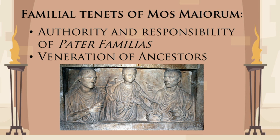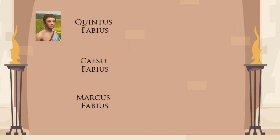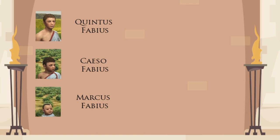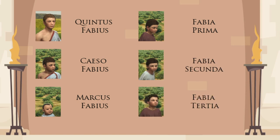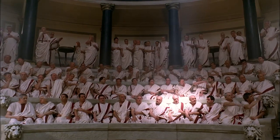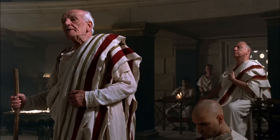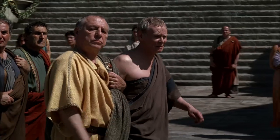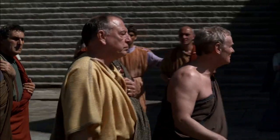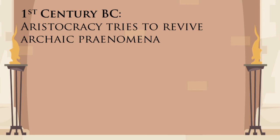This custom did not allow for any individuality in choosing names for children. Boys got their traditional familial praenomina in a predefined order, while girls didn't even get those. Deviations from this system were frowned upon by Roman aristocracy. The Edict of Censors from 92 BC says: 'All new that is done contrary to the usage and custom of our ancestors seems not to be right.' To inject some individuality into their names, Roman aristocrats tried to revive archaic praenomina.